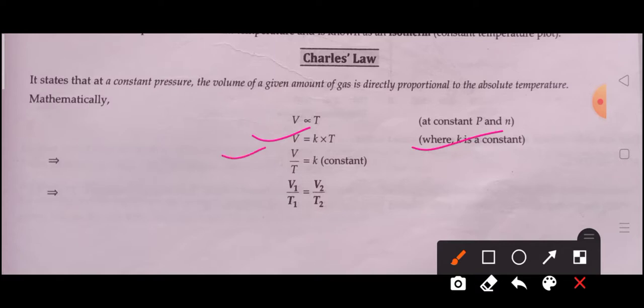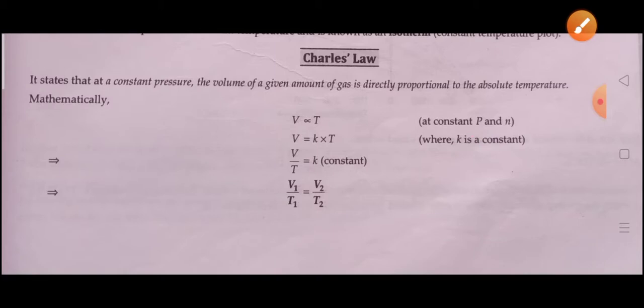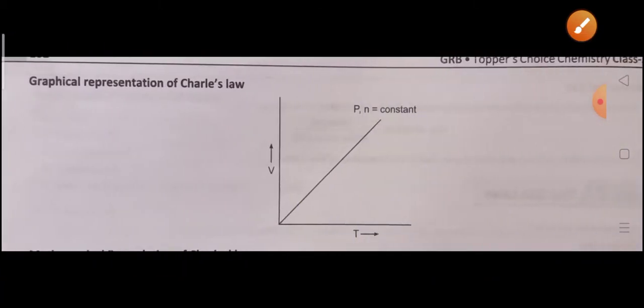For two given conditions, the initial and final conditions, we can write V1/T1 = V2/T2. By using this equation, you can find out the unknown quantity. Now let us see the graphical representation of Charles's law.